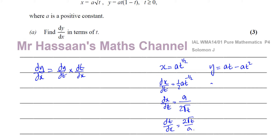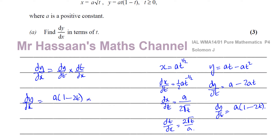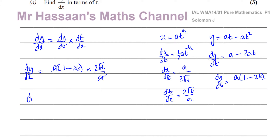dy/dt is simpler: differentiating a t minus a t squared gives a minus 2at, which factorizes to a times 1 minus 2t. So dy/dx equals dy/dt times dt/dx, which is a(1 minus 2t) times 2 root t over a. The a's cancel out, leaving dy/dx equals 2 root t times 1 minus 2t.